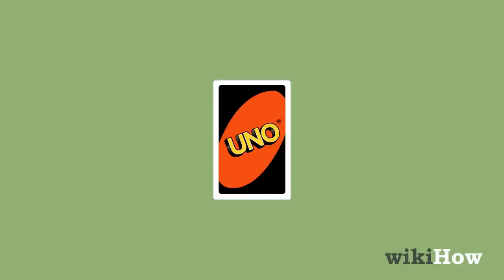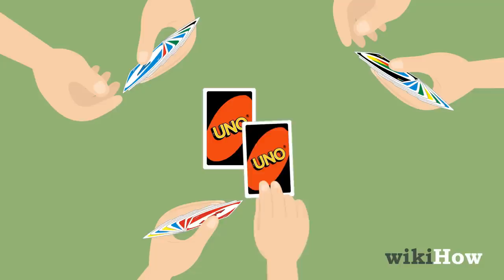Start by dealing seven cards to each player, then place the remaining cards face down in the middle of the table. This is the draw pile. Turn the first card of the draw pile face up and place it in a separate pile. This is the discard pile.